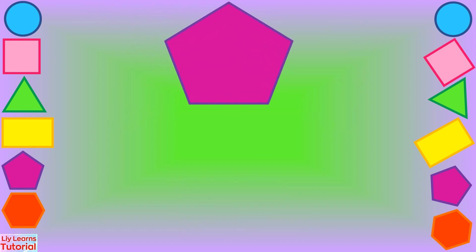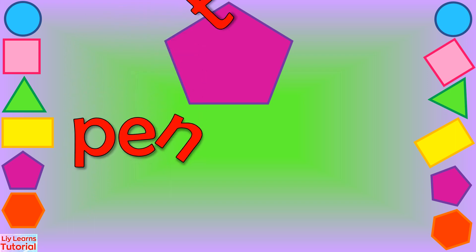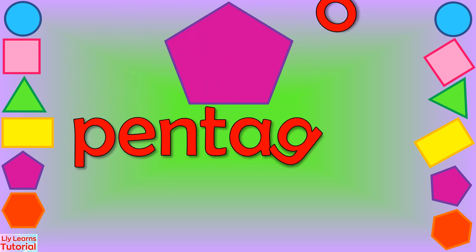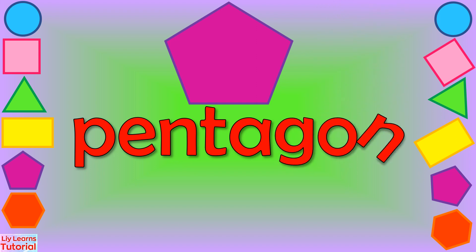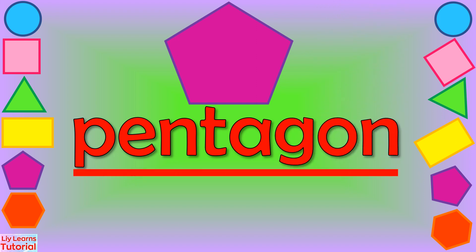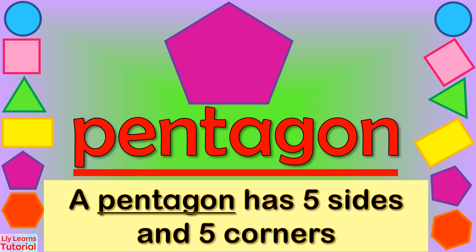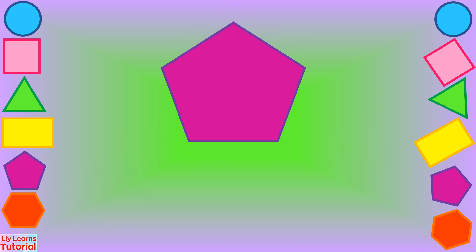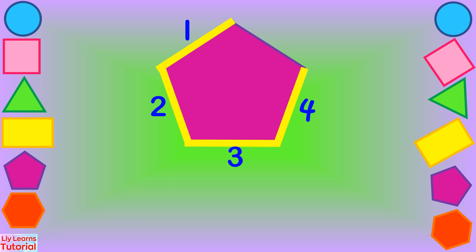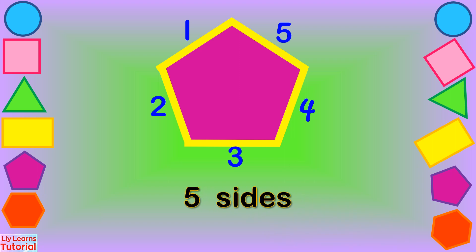Pentagon. P-E-N-T-A-G-O-N. A pentagon has five sides and five corners. Let's count the sides: one, two, three, four, five — five sides.